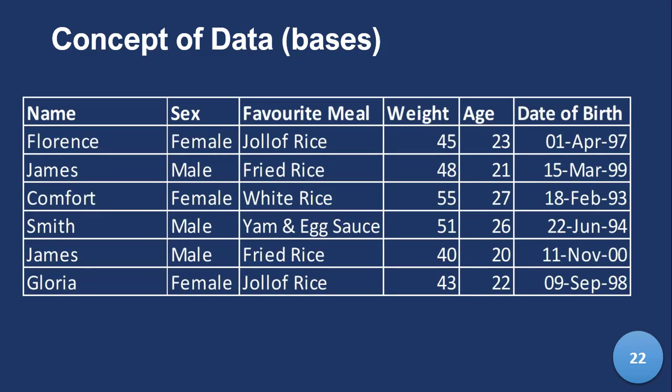Every time you're looking at a column, you are looking at an attribute, and every time you're looking at a row, you are looking at an entity. These concepts will be very useful as you begin to do your analysis and reviews. It's very important to understand how they work together to help you achieve your goals, especially when you're working with data.